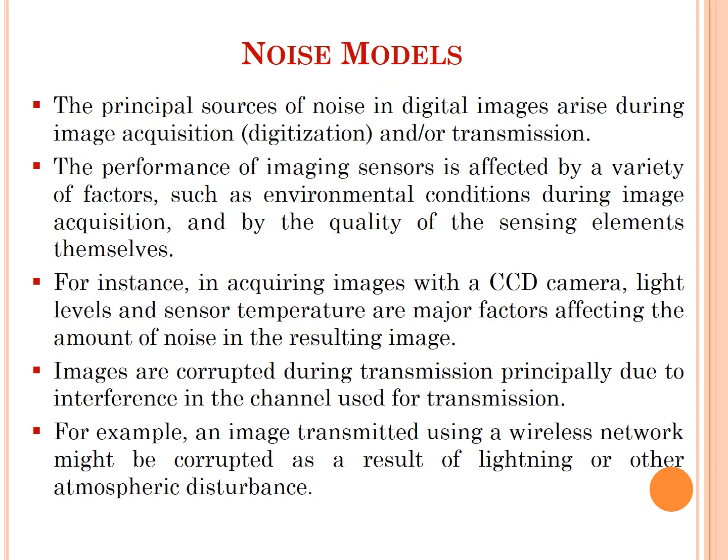Now the next is noise models. The principal sources of noise in digital images arise during image acquisition, that is digitization, and/or transmission. The performance of image sensors is affected by a variety of factors such as environmental conditions during image acquisition and by the quality of the sensing elements themselves. For instance, in acquiring images with a CCD camera, light levels and sensor temperature are major factors affecting the amount of noise in the resulting image. Images are corrupted during transmission principally due to interference in the channel used for transmission. For example, an image transmitted using a wireless network might be corrupted as a result of lightning or other atmospheric disturbance.